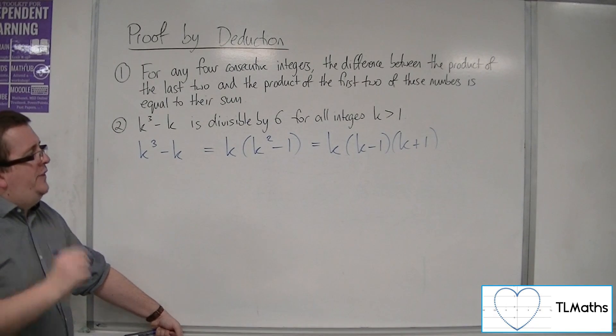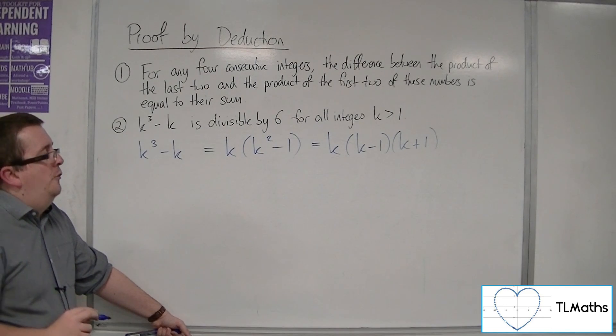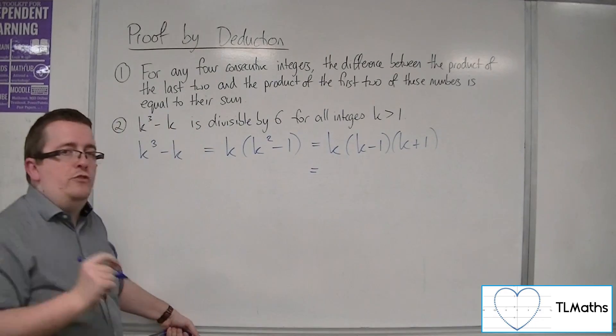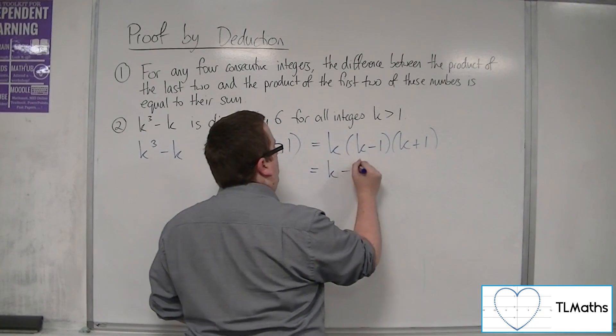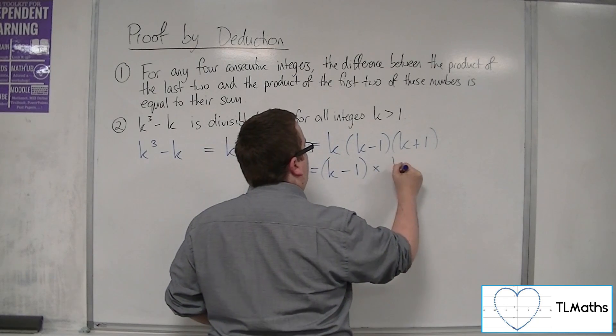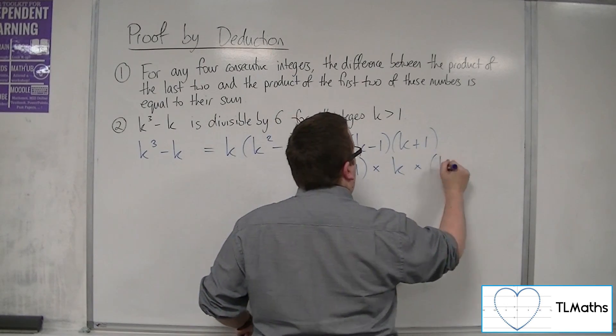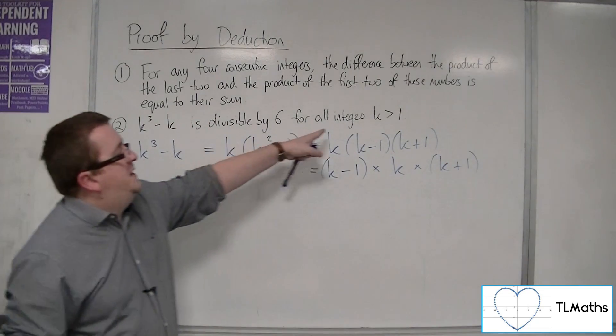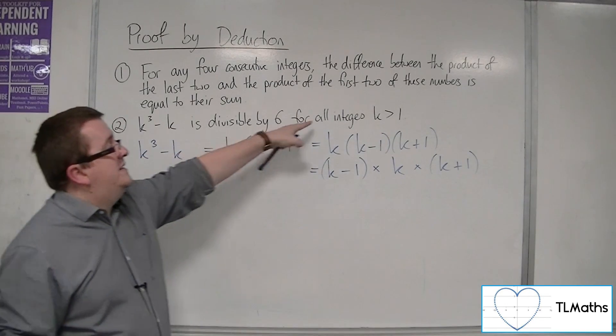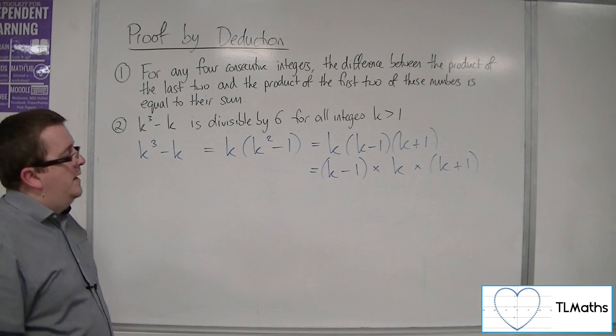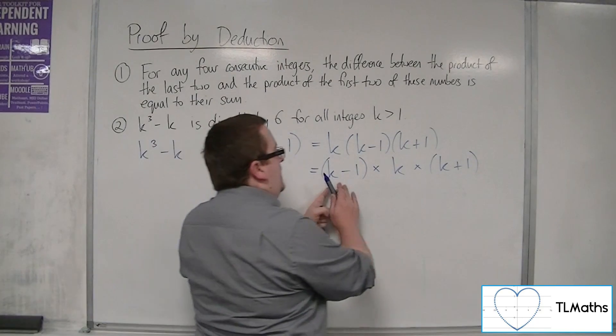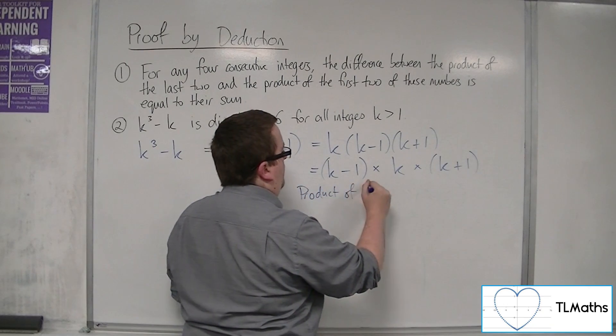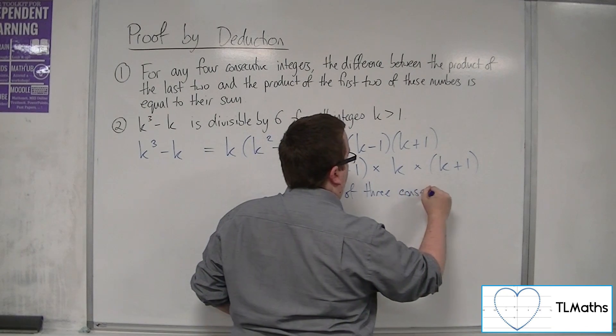Now, by itself, this isn't looking very helpful until I write it in a slightly different order. So if I write the k-1 bracket first, and I'm multiplying that by k, and then I'm multiplying that by k+1. So if we think about what k is, k is an integer greater than 1,